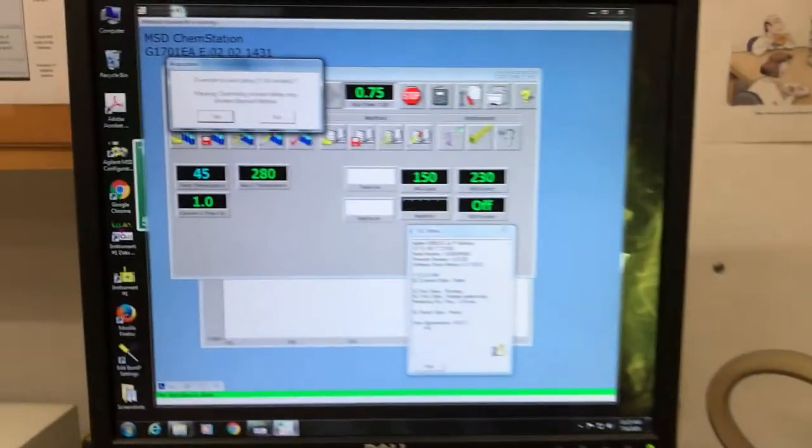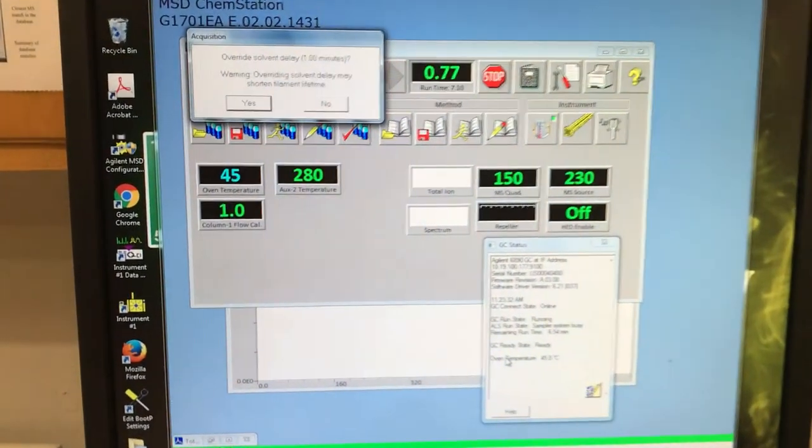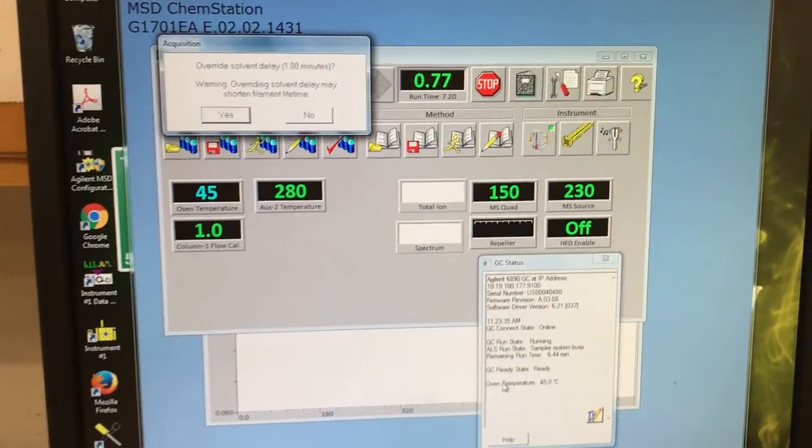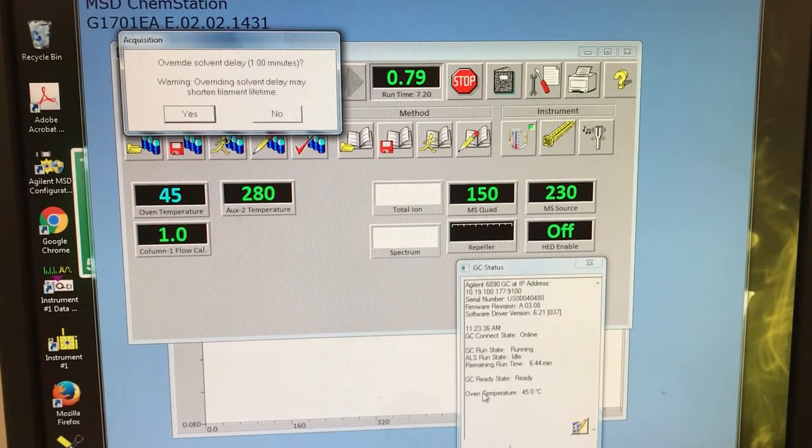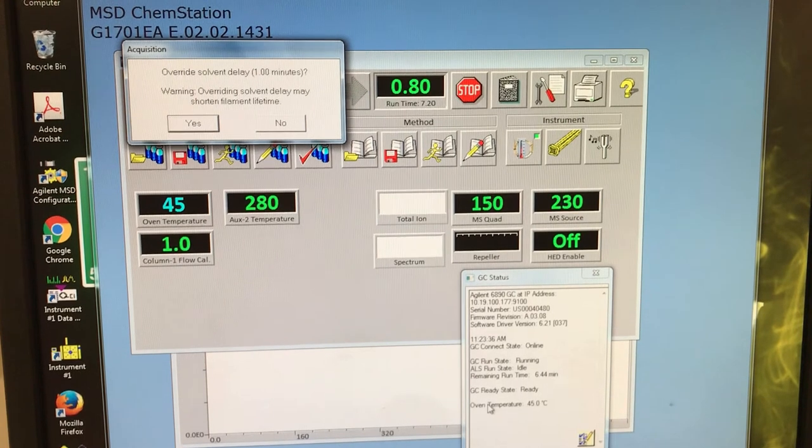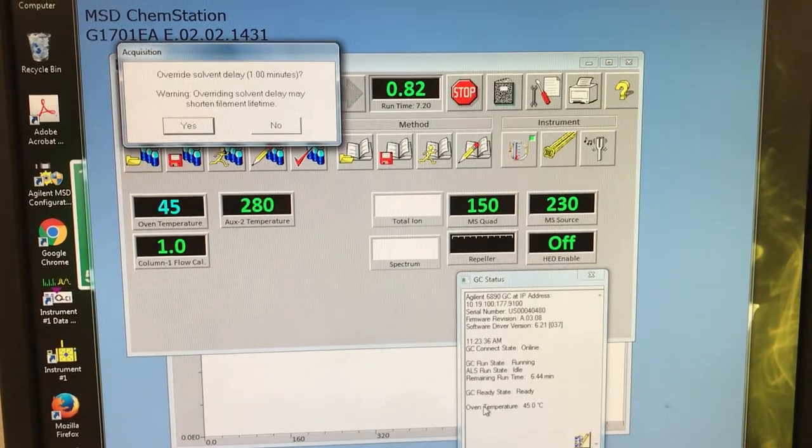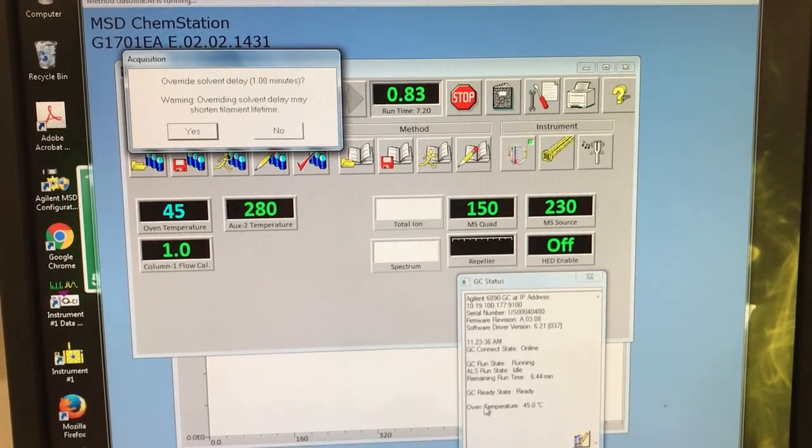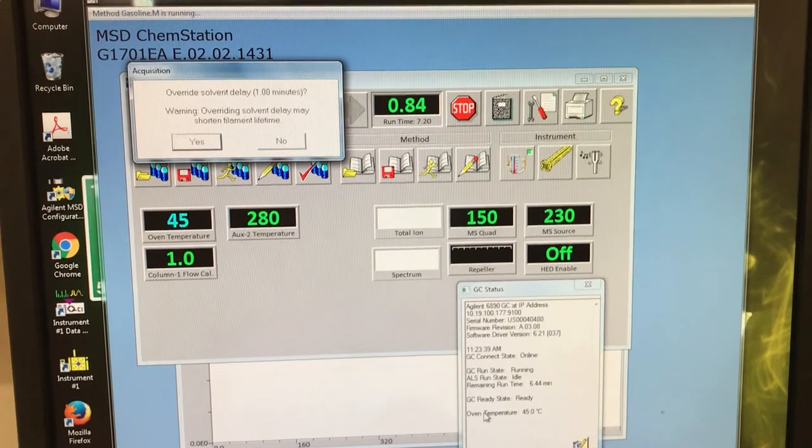Then on the computer you'll notice that the time is going up and it is running. At my college we have a mass spectrometer as our detector at the end of the GC and if you have one of those you'll get this comment that says override solvent delay and you want to do nothing. You can just ignore it and it'll go away or you could push no.